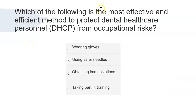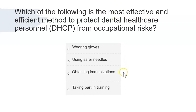Question: Which is the most effective and efficient method to protect dental healthcare personnel from occupational risk? Wearing gloves, using safer needles, obtaining immunizations, or taking part in training? The answer is C: obtaining immunizations. All options are great, but immunizations are the most effective — they substantially reduce the number of us who are susceptible to diseases.